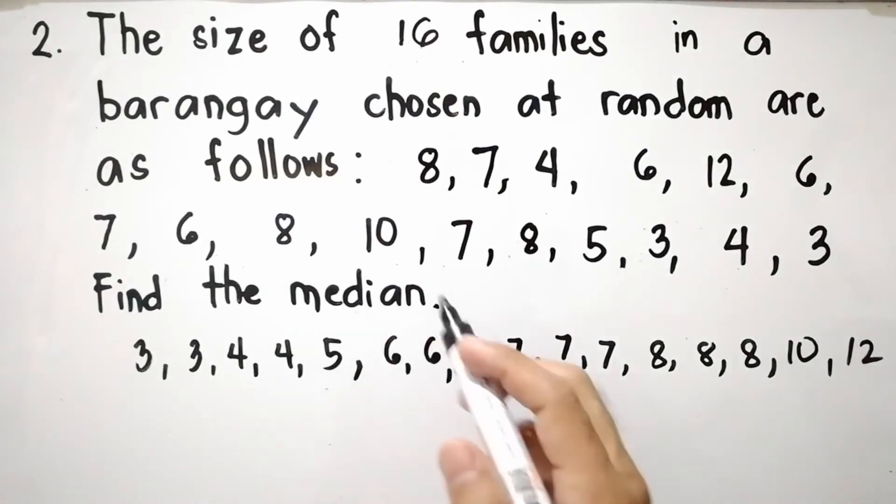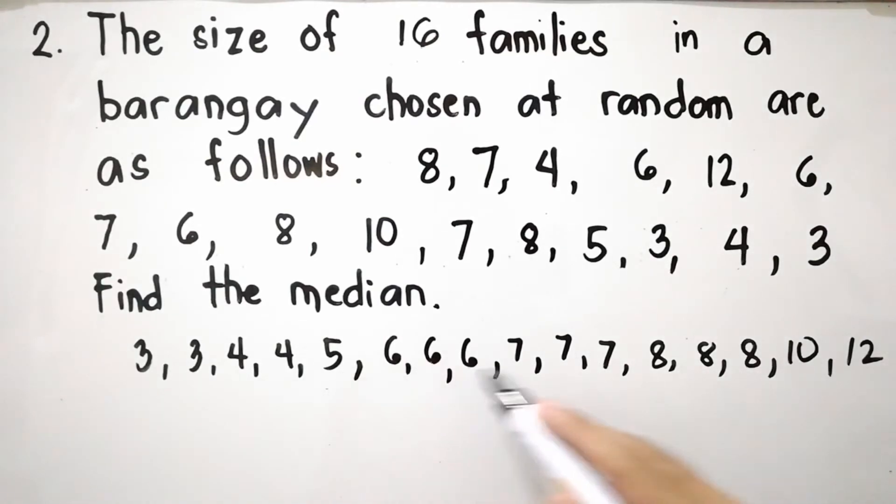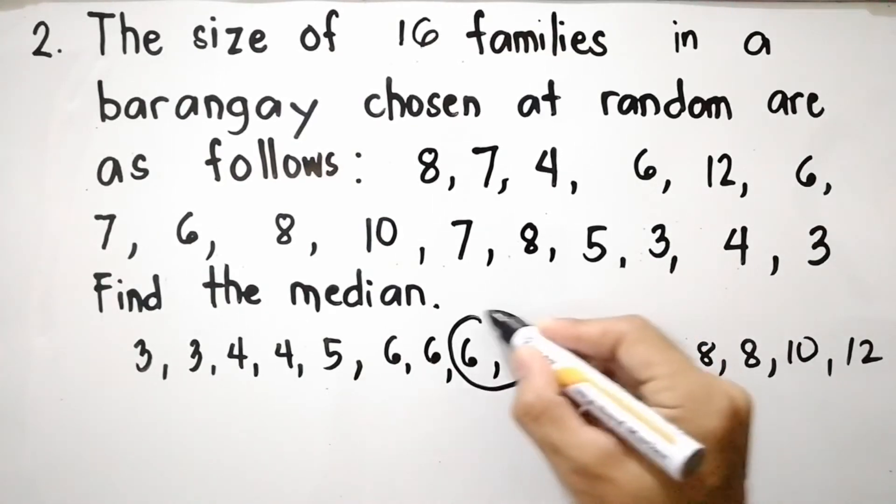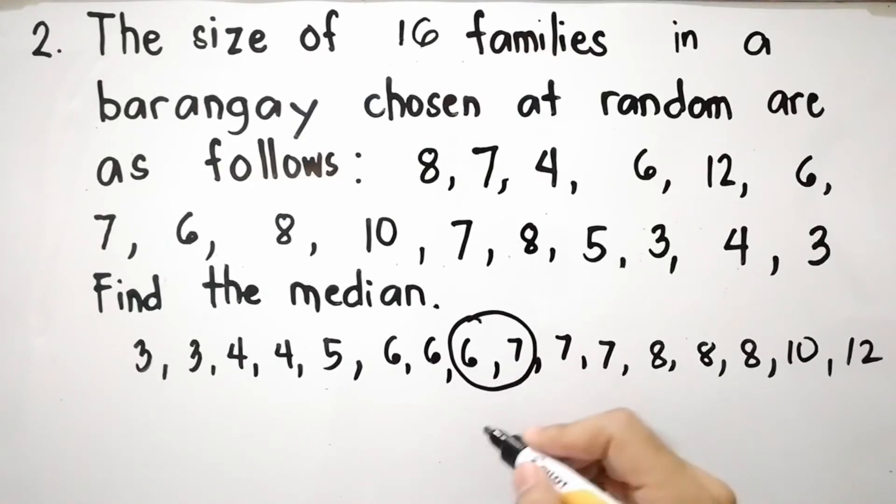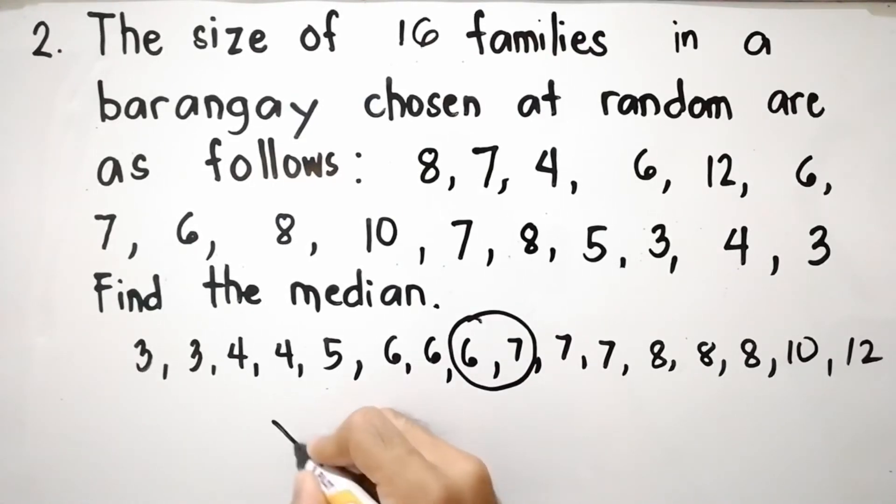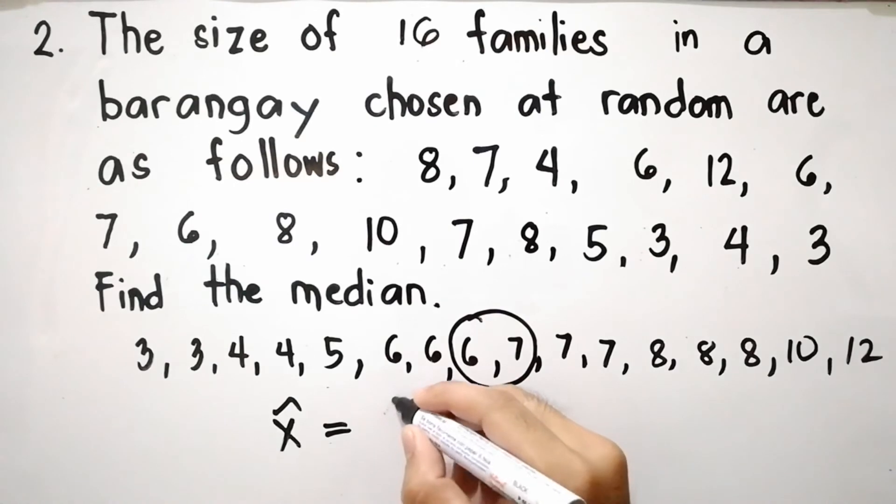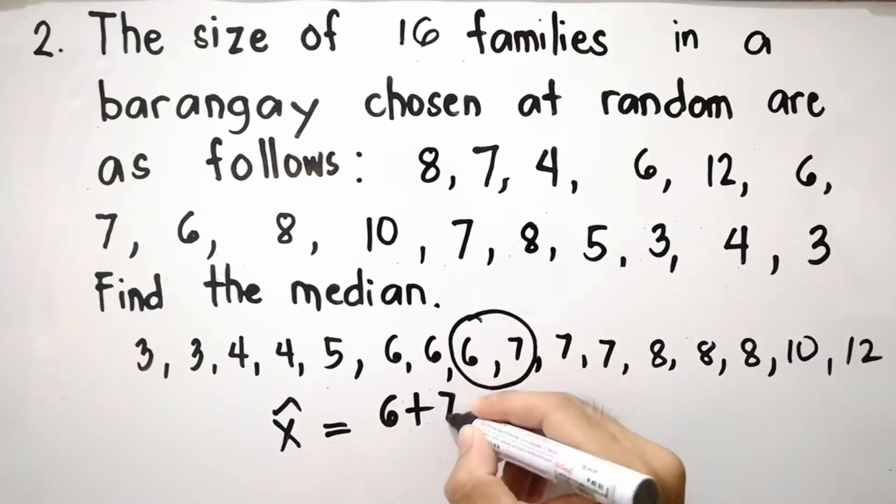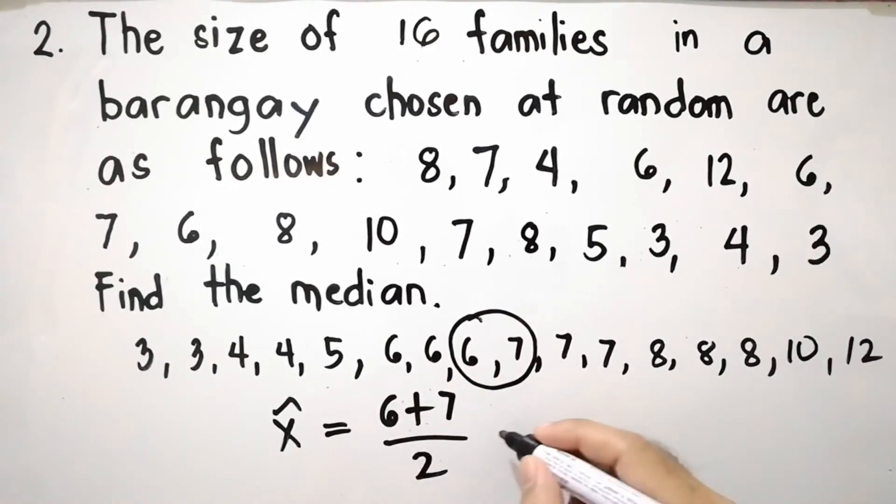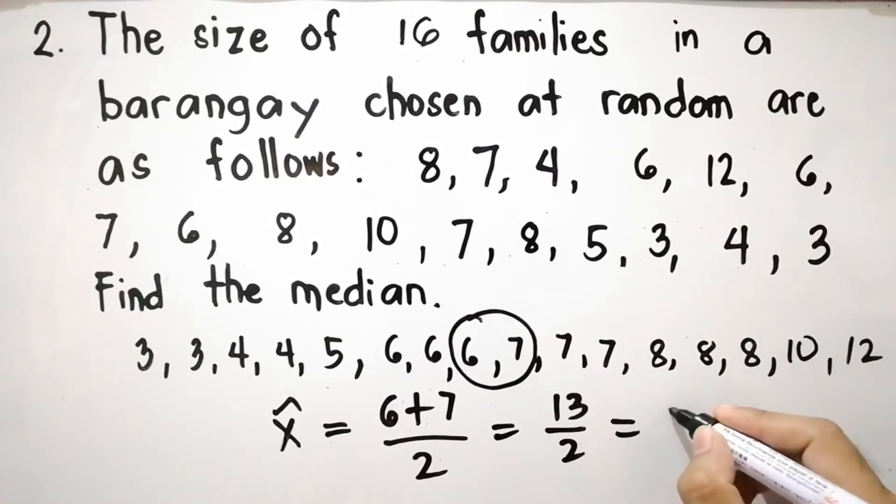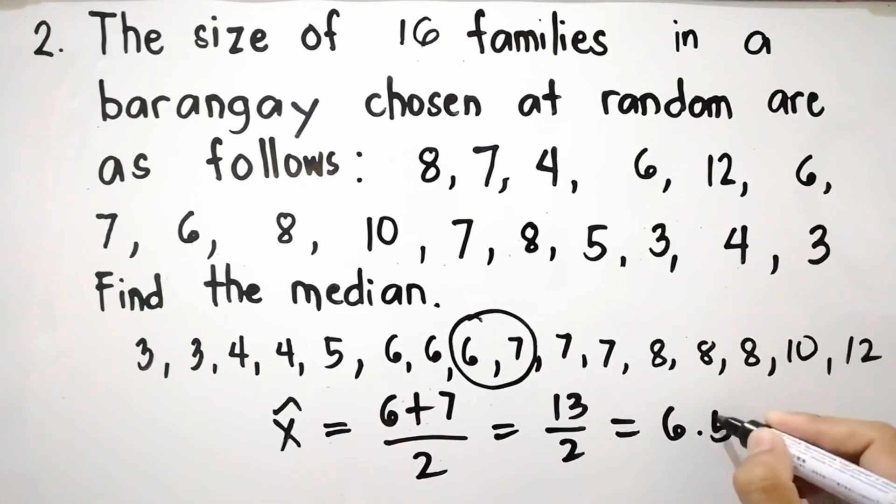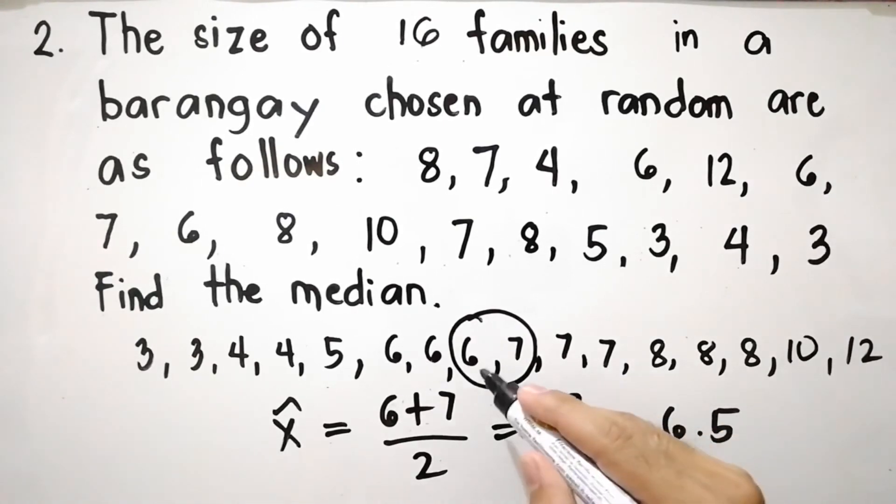Now we can identify the median by finding the middle value. The middle value here is 6 and 7. So the median, denoted as x-tilde, is equal to 6 plus 7 divided by 2. 6 plus 7 is 13 divided by 2, which equals 6.5. That is between 6 and 7.